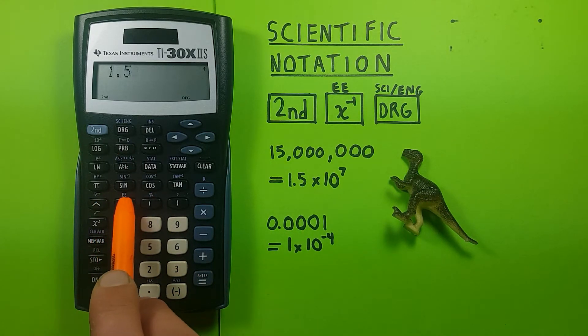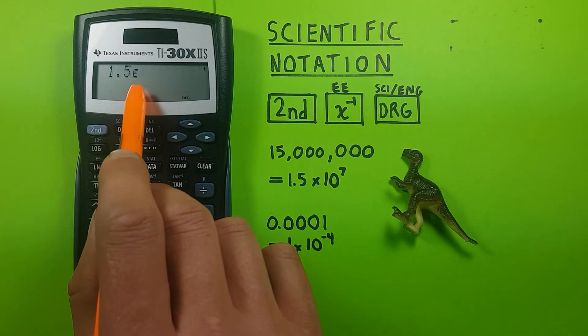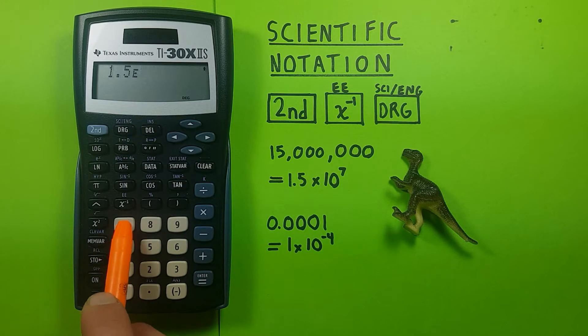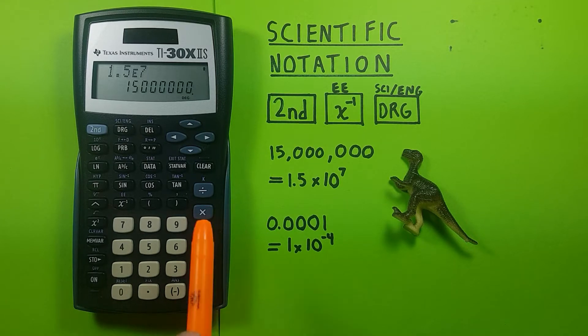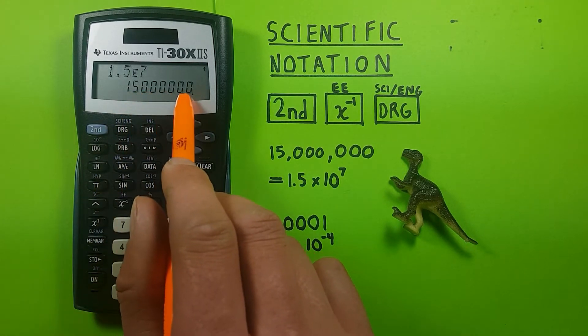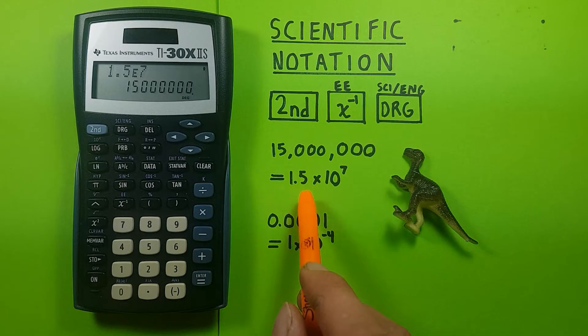Then 7, because this is to the 7th power. And then we hit enter, and this gives us 15 million, which is the same as 1.5 times 10 to the 7th.